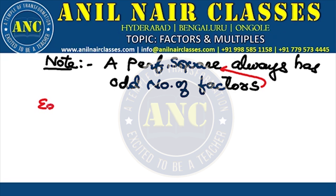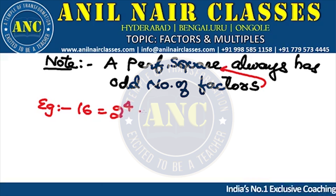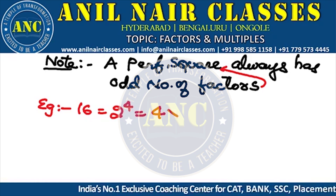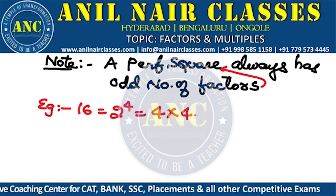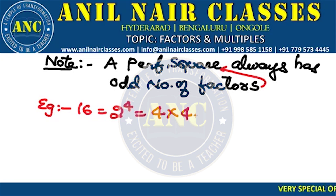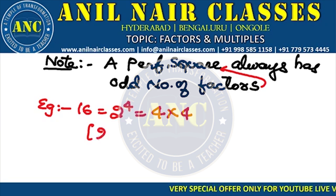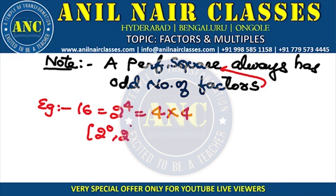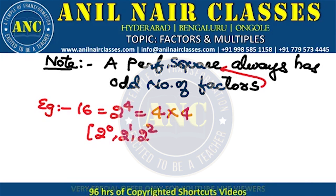Suppose I take 16. 16 is nothing but 2 to the power 4. 16 is 4 into 4 — if I multiply a number by itself, it becomes a perfect square. The factors of 2^4 are: 2^0, 2^1, 2^2, 2^3, 2^4.